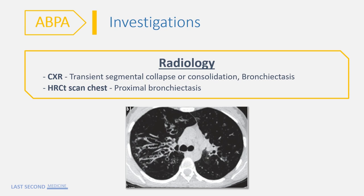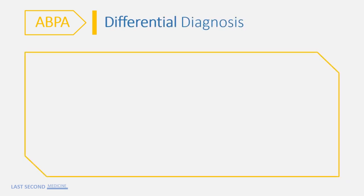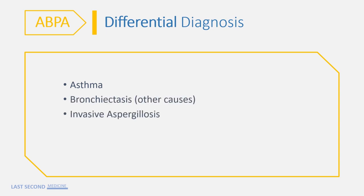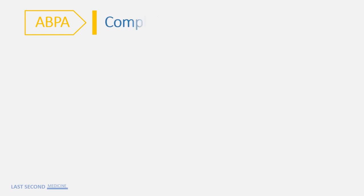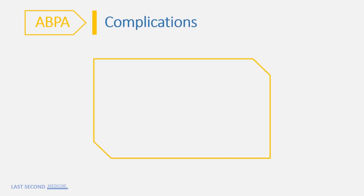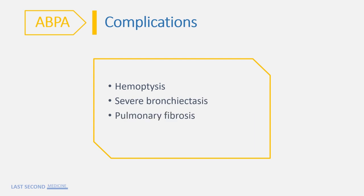Here you can see typical bronchiectatic changes, more on the right side and these are central. Differential diagnosis of ABPA includes bronchiectasis and other causes of bronchiectasis, invasive aspergillosis, Churg-Strauss syndrome, and chronic obstructive pulmonary disease. Complications of this disease include hemoptysis, severe bronchiectasis, pulmonary fibrosis, and atelectasis due to mucus plugs.